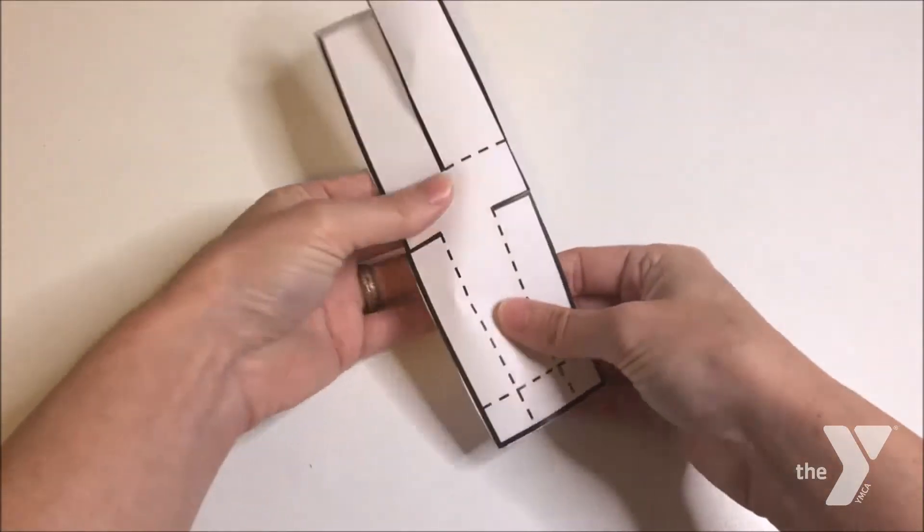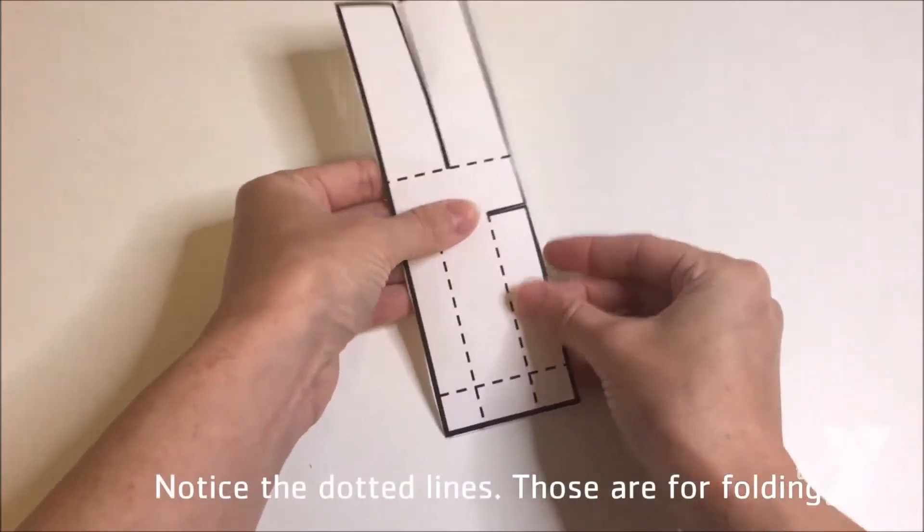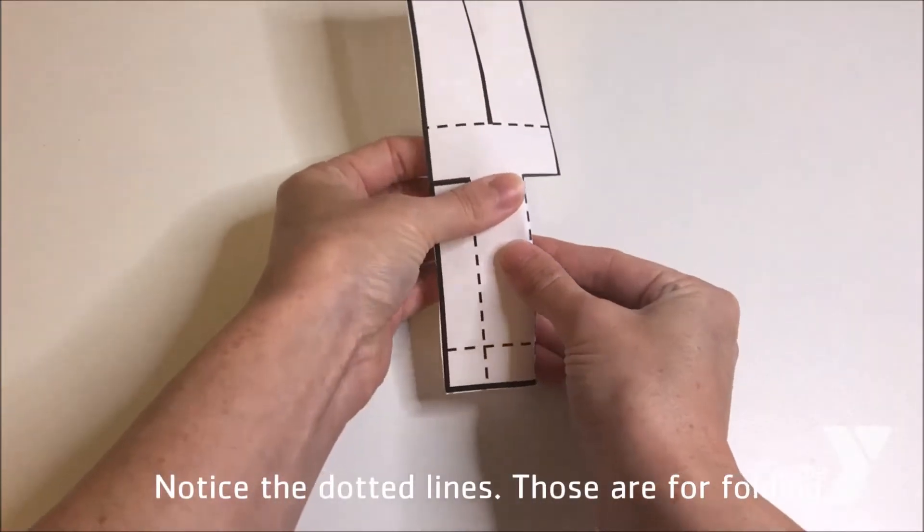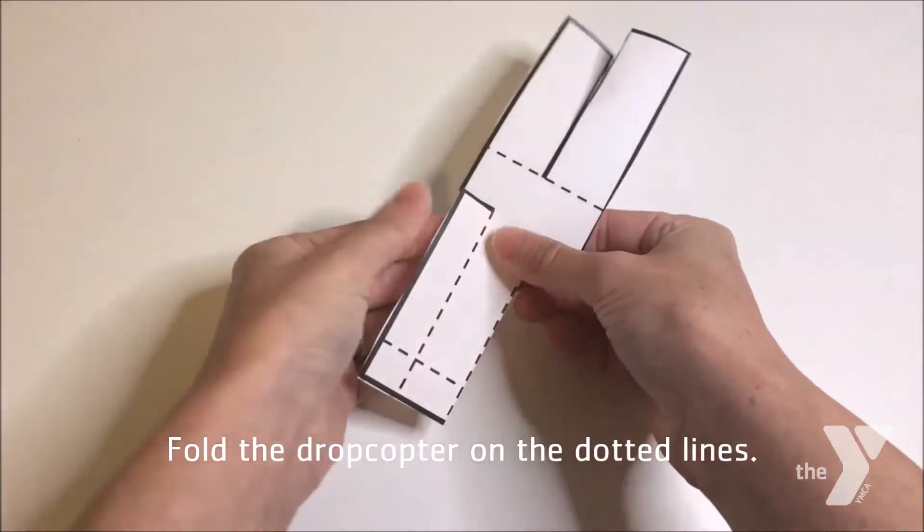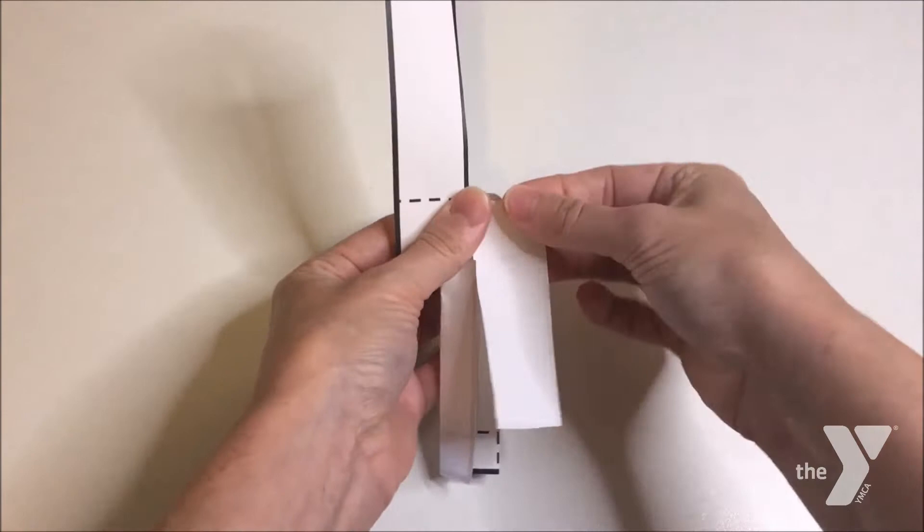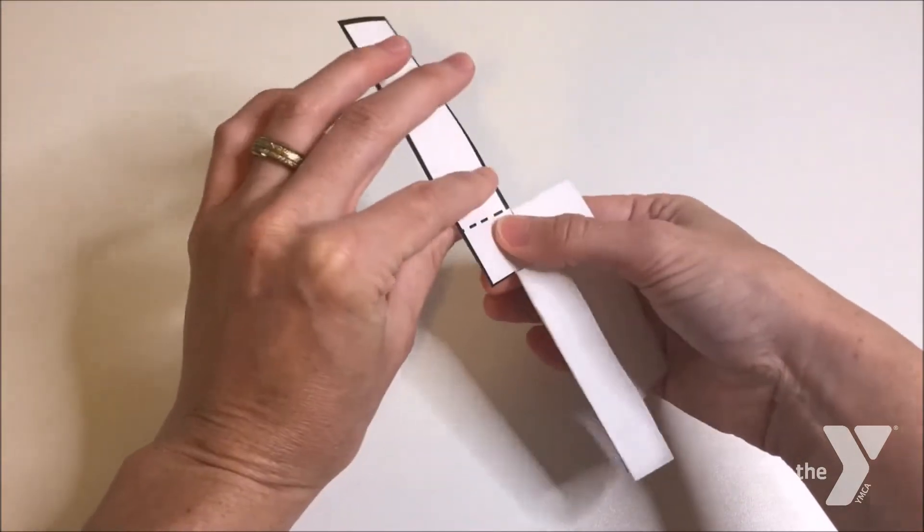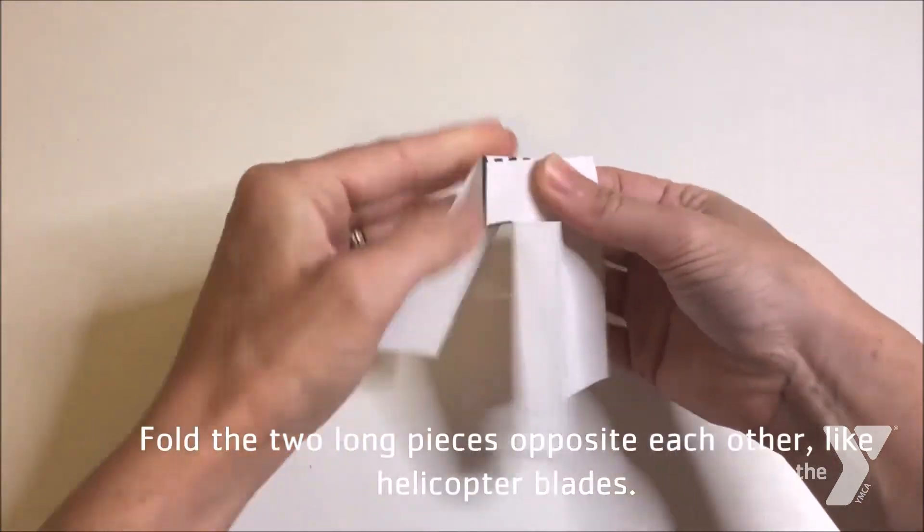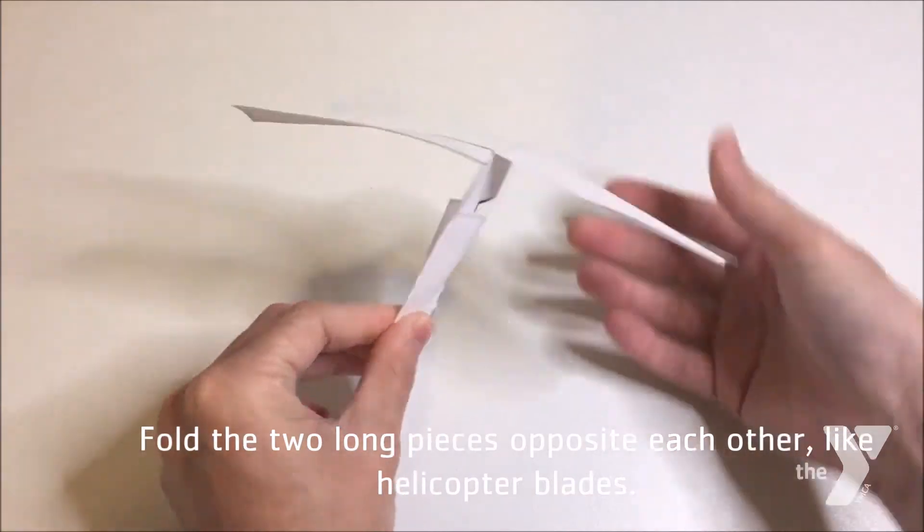Notice the dotted lines. Those are for folding. So go ahead and do that and fold the drop copter on the dotted lines, like what you see me doing here. Notice that the two long kind of pieces of paper at the top, they need to be folded opposite each other. They're going to be the wings. That's why.